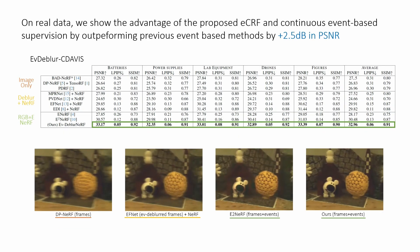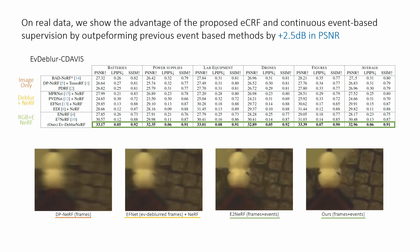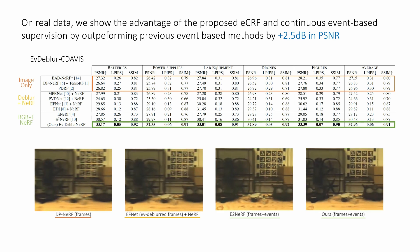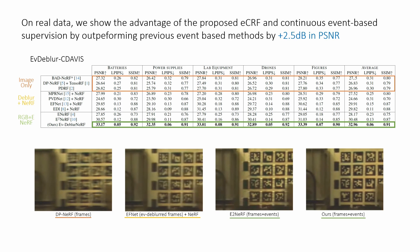We see a similar trend on real-world scenes. In this data, all pixels exhibit consistent motion blur across the whole video, preventing image-only methods from exploiting views where certain regions of the scene might appear less blurred, which causes these methods to perform poorly.